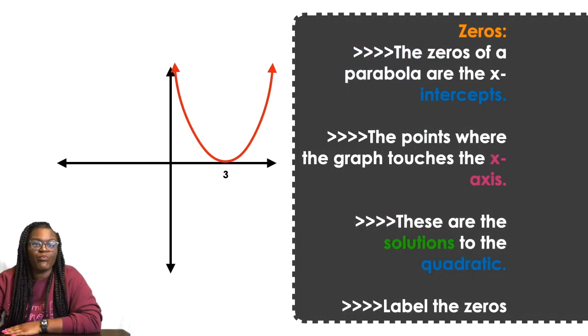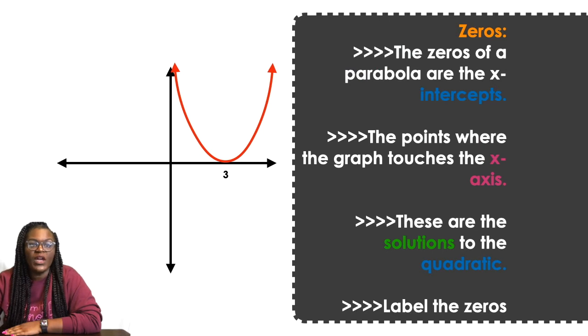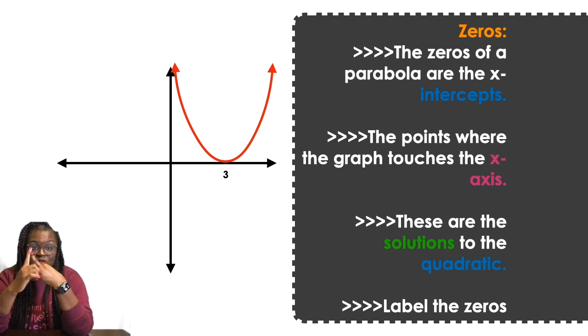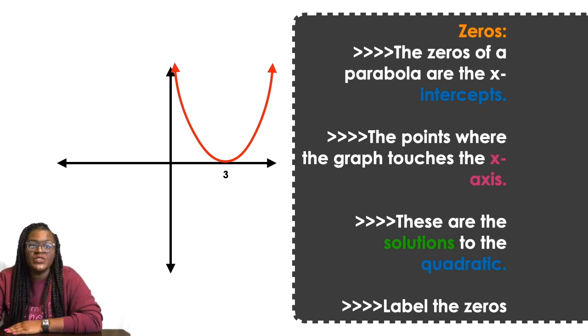The next thing: we've learned about domain and range, we've learned about vertex, minimums and maximums, we've learned about axis of symmetry. Now we're gonna learn about zeros. So zeros are where the graph touches that x-axis. The zeros of a parabola are the x-intercepts, the points on where each graph touches the x-axis.